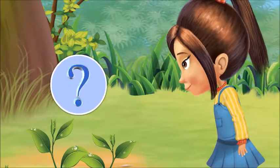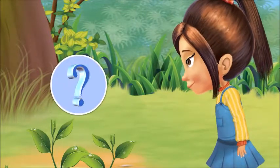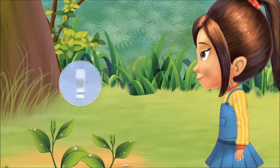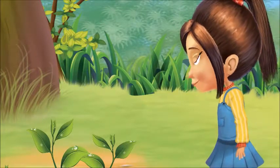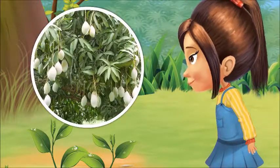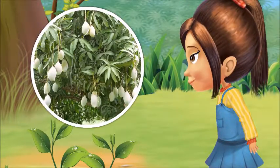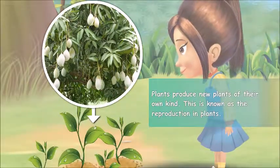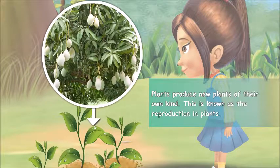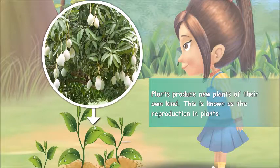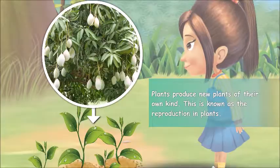Have you ever wondered where these small plants come from? Well, they actually come from big trees of the same kind. The plants produce new plants of their own kind. This is known as reproduction in plants.